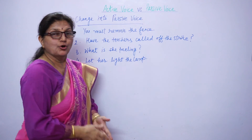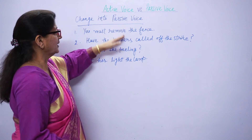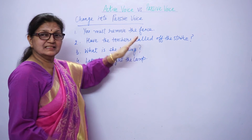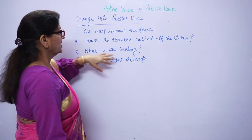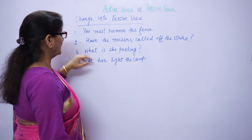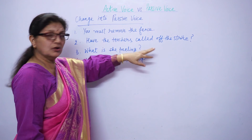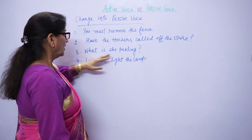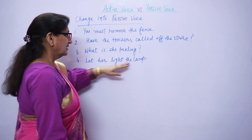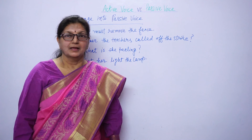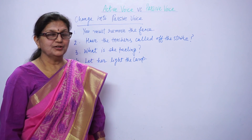Your home task — four sentences are there. You have to change the sentences into passive voice. You must remove the fence. Have the teacher scolded for the strike? What is she peeling? Let her light the lamp. I hope you like the video.